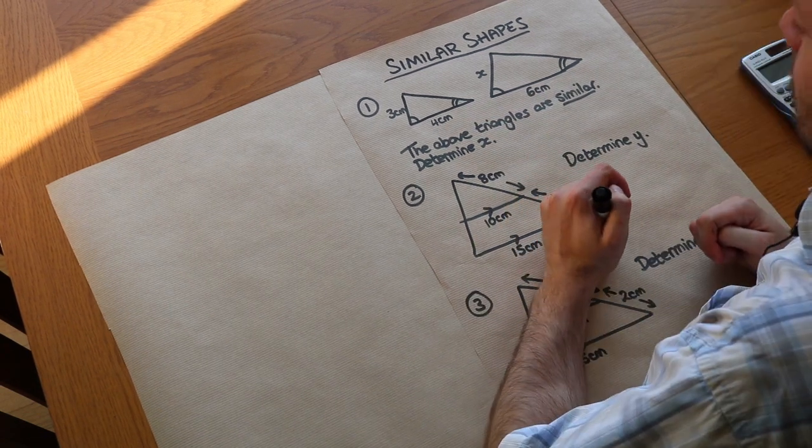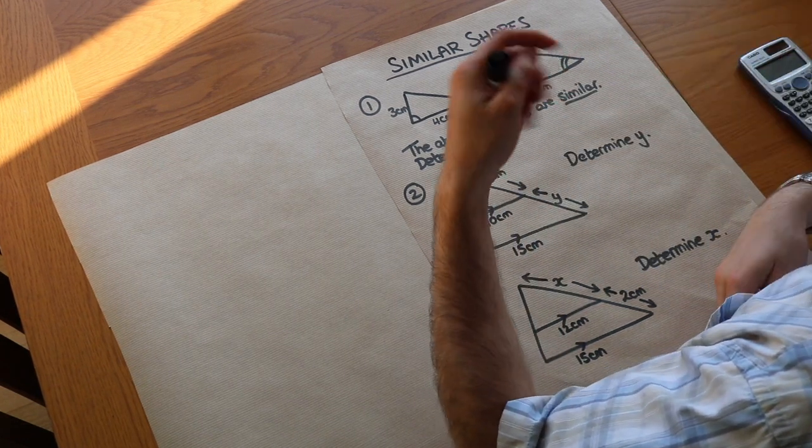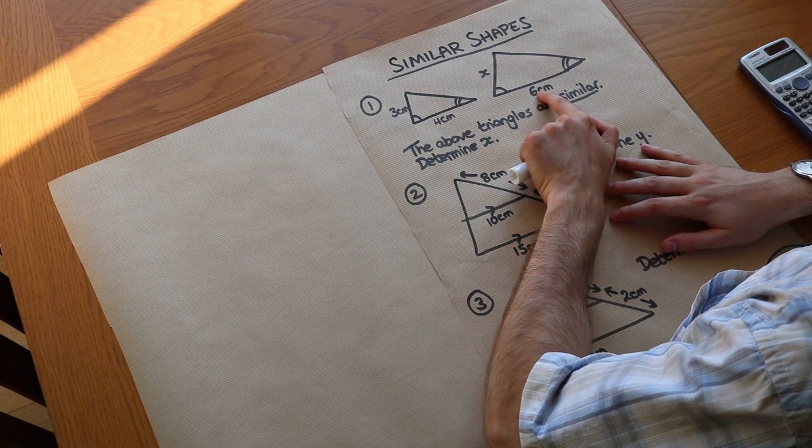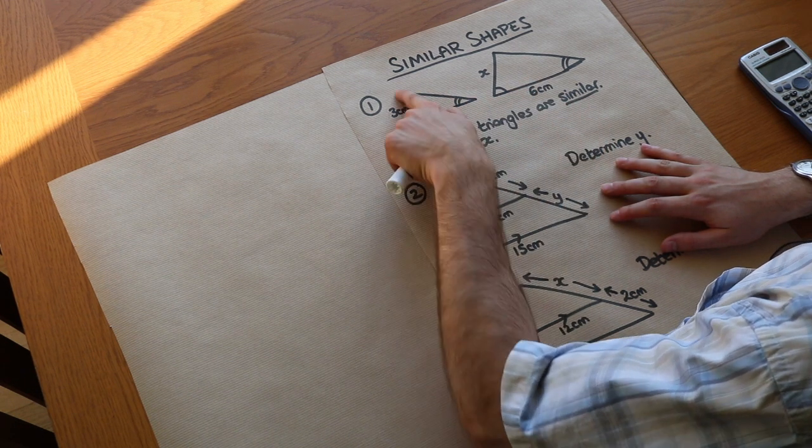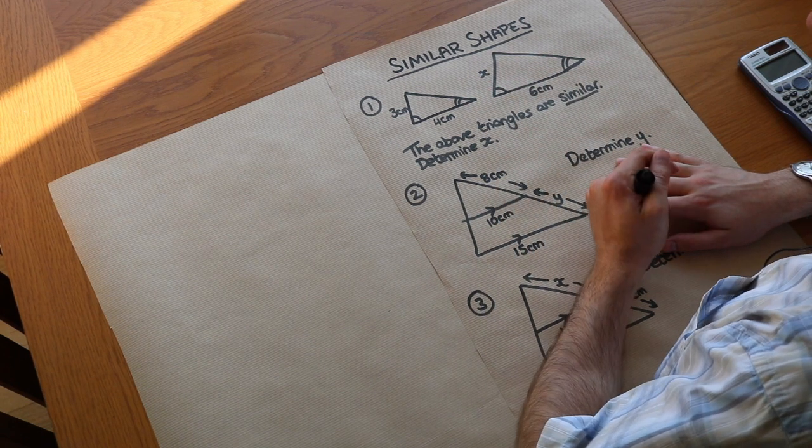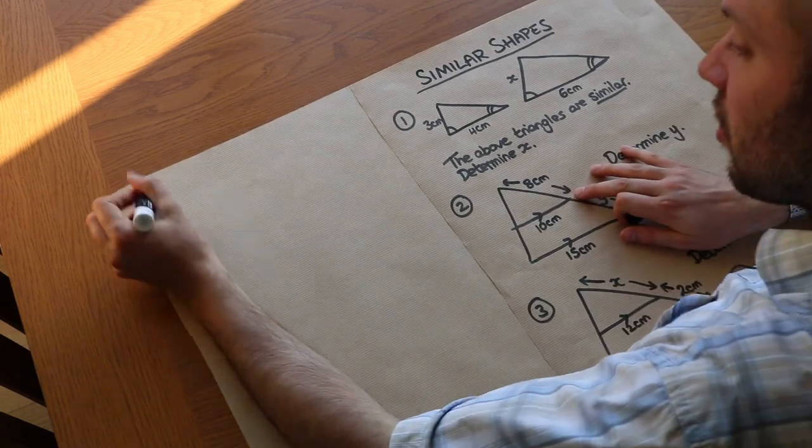The key principle with similar shapes is that all the lengths will scale in the same proportion. So for the four to six example, we can see that's 50% larger, which means all the other lengths will also be 50% larger. Let's use this principle to solve these particular questions.